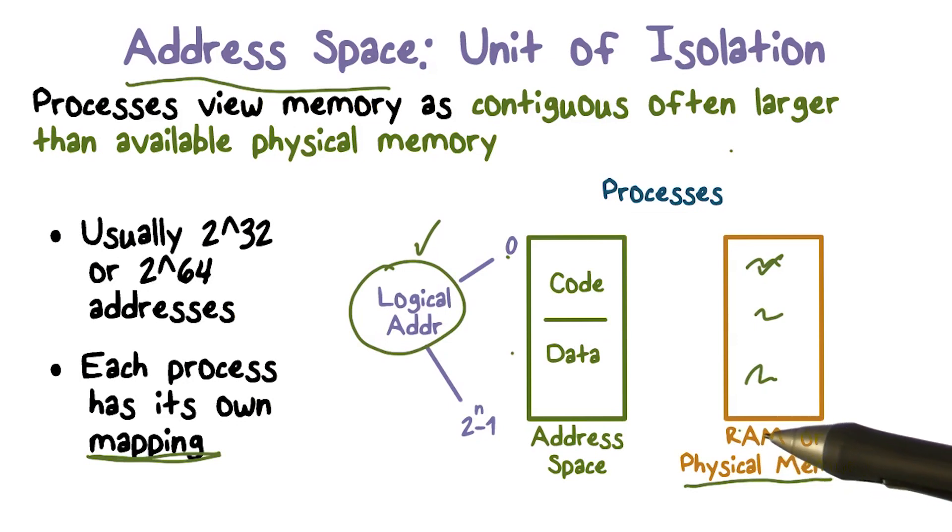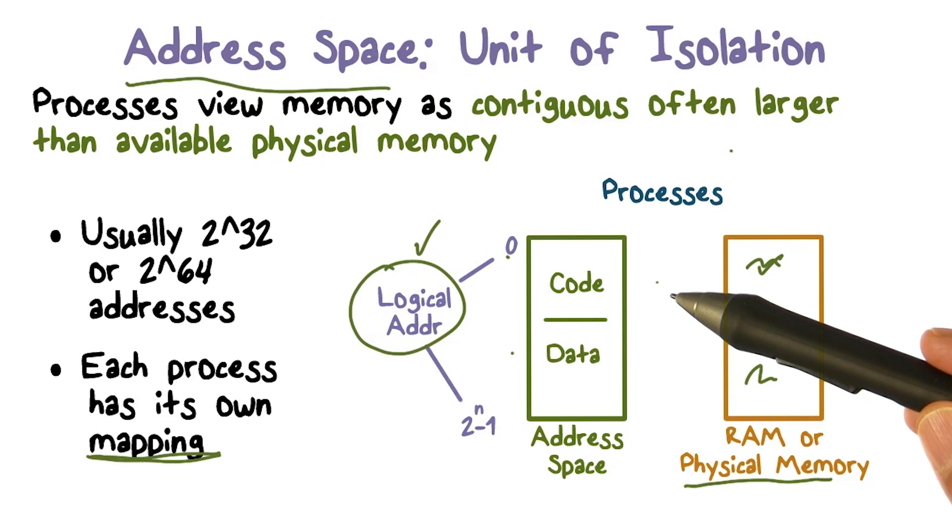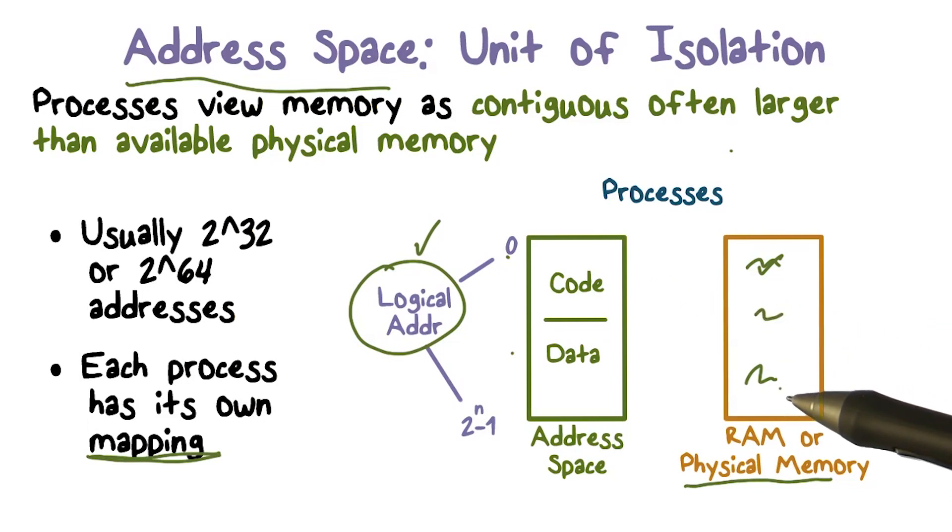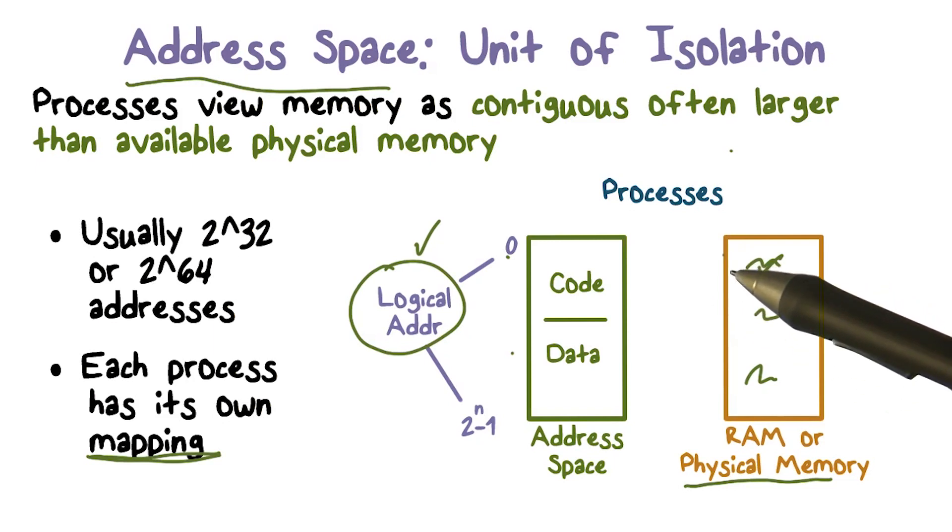So one of the things about isolation is that if I'm giving you some physical memory for your address space, process A, and I give some physical memory to another process B, and it uses that memory to store some of its stuff from its address space, I have to isolate the two address spaces.